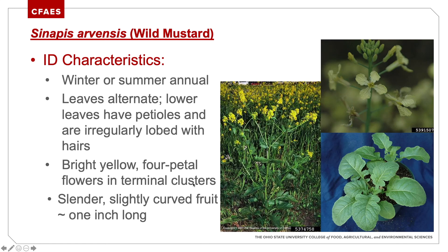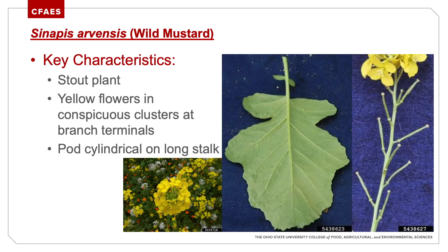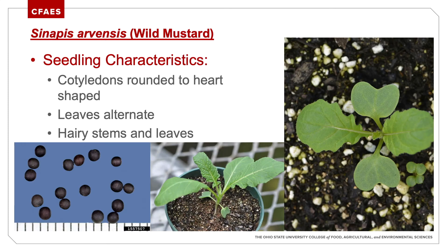Wild mustard — winter or summer annual. Leaves alternate; lower leaves have petioles and are irregularly lobed with hairs. Bright yellow flowers, stout plant with yellow flowers in conspicuous clusters at branch terminals. It has a really pretty flower. Cotyledons are rounded to heart-shaped; leaves are alternate with hairy stems and leaves. The wild mustard seedlings have beautiful hairs all over them and on the margins — great ID characteristics.